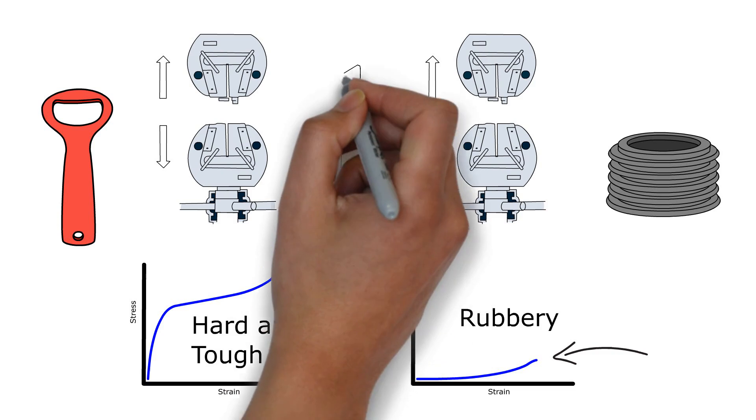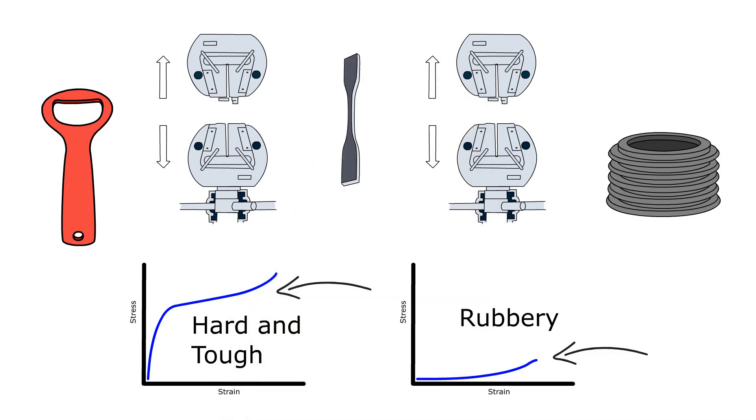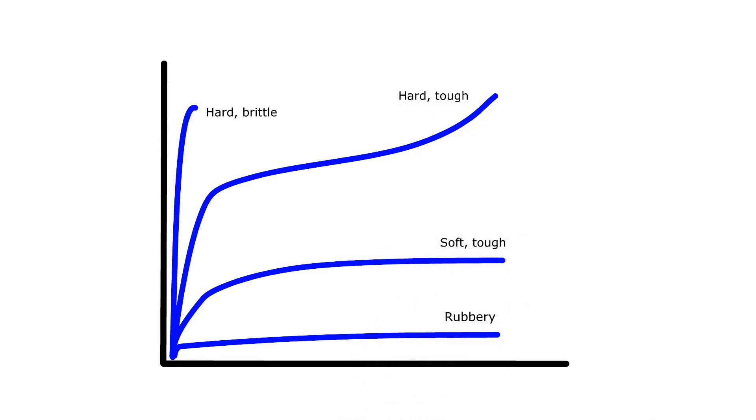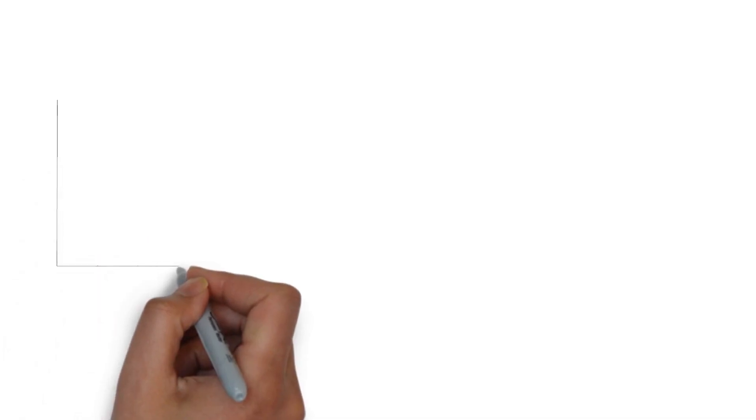Eventually, we pull the test dog bones both so far apart that they break, and we observe that the two graphs are very different. The shape of the graph now allows us to categorize our materials by the different properties that we can see, and we can also give some more scientific names to the important properties that we observe from our tensile test.